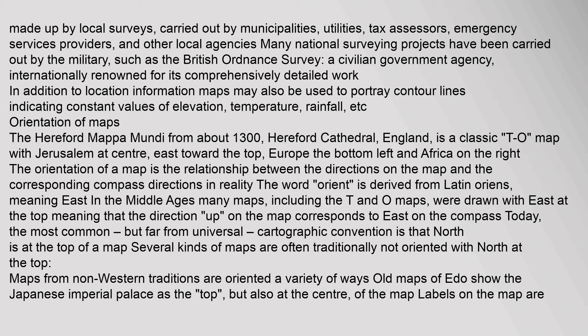The Hereford Mapa Mundi from about 1300, held at Hereford Cathedral, England, is a classic TO map with Jerusalem at center, east toward the top, Europe at the bottom left and Africa on the right. The orientation of a map is the relationship between the directions on the map and the corresponding compass directions. In reality, the word 'orient' is derived from Latin 'oriens', meaning east. In the Middle Ages, many maps, including the T and O maps, were drawn with east at the top.